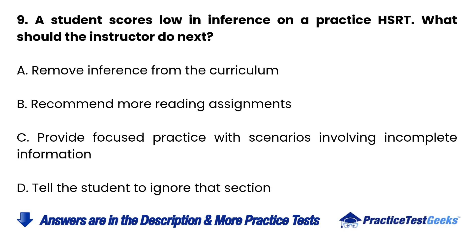Question 9: A student scores low in inference on a practice HSRT. What should the instructor do next? a. Remove inference from the curriculum. b. Recommend more reading assignments. c. Provide focused practice with scenarios involving incomplete information. d. Tell the student to ignore that section.